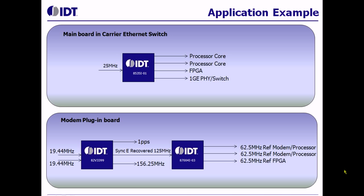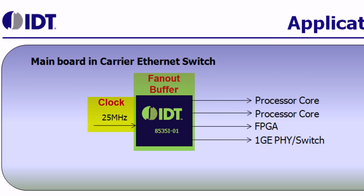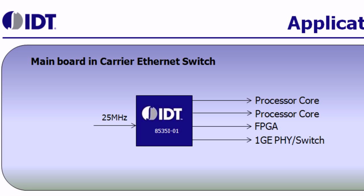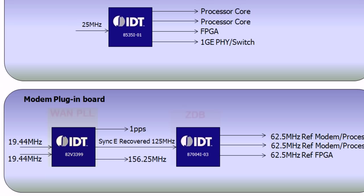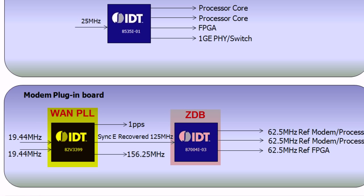This slide shows different applications of a fan-out buffer. Typically, we see clocks fan out to different PHYs, processors, and cores on a typical board. In some applications, designers want these clocks to be synchronized for timing. In the second case, a zero-delay buffer is used to divide the clock and then distribute it over the board.